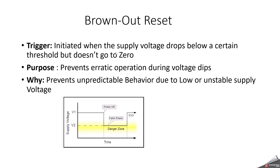Another one is brownout reset, which engineers often hear about. Brownout reset in a microcontroller occurs when the power supply voltage drops below a minimum operating level, triggering a reset to prevent damage. Its purpose is to prevent erratic operation during voltage dips. If the voltage drops below the known threshold level, a brownout reset occurs to prevent unpredictable behavior due to a low or unstable power supply. The main causes are power supply issues, and the reset mechanism handles recovery.